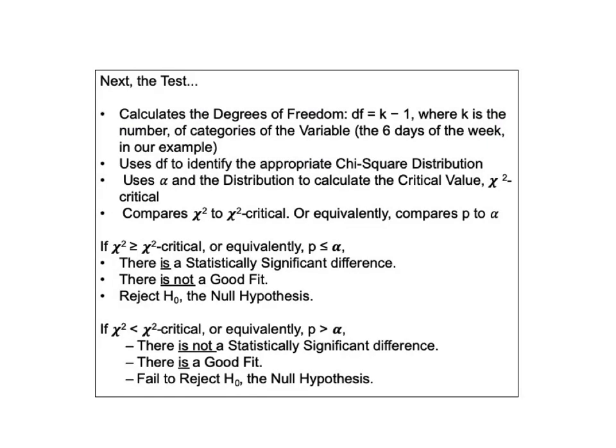Next, the test calculates the degrees of freedom: df equals k minus 1, where k is the number of categories of the variable — the six days of the week in our example. It uses df to identify the appropriate chi-squared distribution, uses alpha in the distribution to calculate the critical value chi-squared critical, and compares chi-squared to chi-squared critical, or equivalently compares p to alpha.